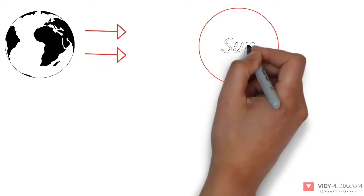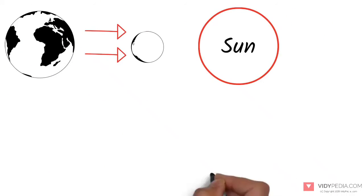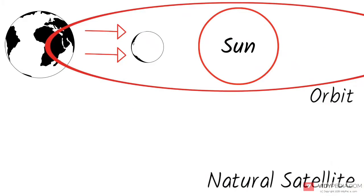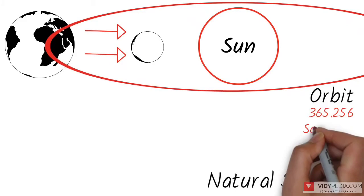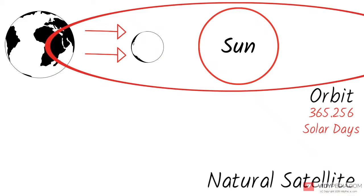Earth's gravity interacts with other objects in space, especially the Sun and the Moon, which is Earth's only natural satellite. Earth orbits the Sun in 365.256 solar days, a period known as an Earth-sidereal year.